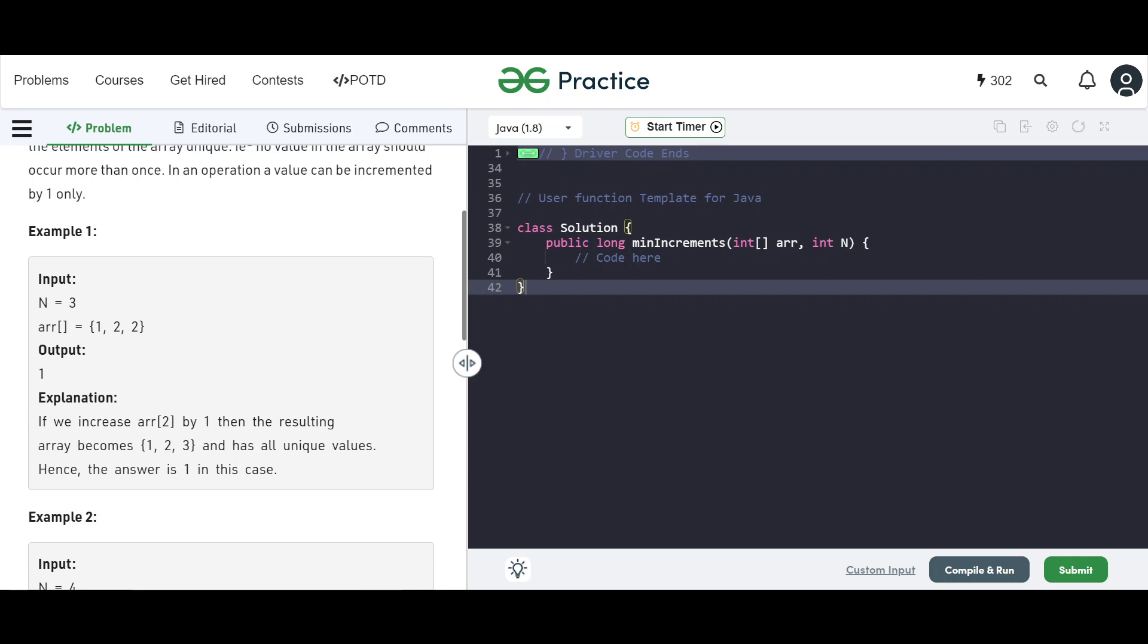This is the example input: one, two, two. If we increase array[2] by one, then the resulting array becomes one, two, three and has all unique values. Hence the answer is one in this case.